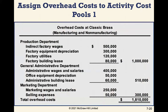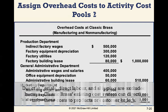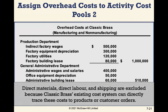Overhead costs at Classic Brass include both manufacturing and non-manufacturing costs: indirect factory wages, factory equipment depreciation, factory utilities, factory building lease, administrative wages and salaries, office equipment depreciation, administrative building lease, marketing wages and salaries, and selling expenses. Direct materials, direct labor, and shipping have been excluded because Classic Brass's existing system can already directly trace those costs to products or customer orders.